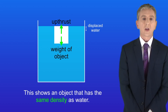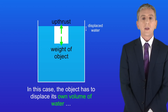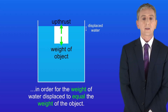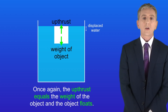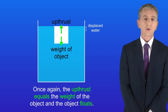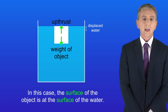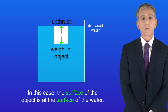This shows an object that has the same density as water. In this case the object has to displace its own volume of water in order for the weight of water displaced to equal the weight of the object. Once again the upthrust equals the weight of the object and the object floats, but in this case the surface of the object is at the surface of the water.